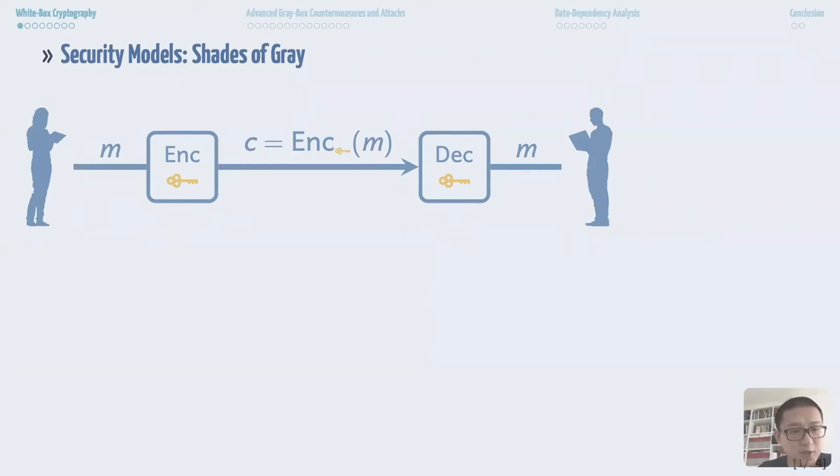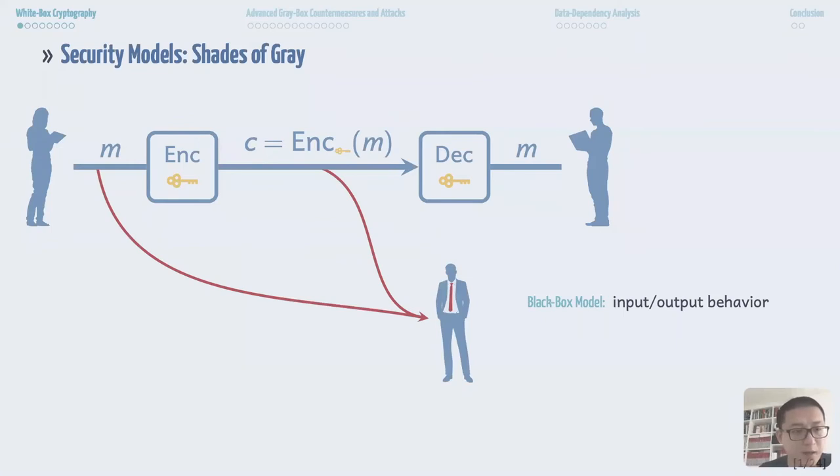We consider two parties to communicate over an insecure channel with a pre-shared secret K. Classical cryptanalysis is done in a black box model in the sense that the adversary only has access to the encryption decryption algorithm as a black box. That is, the adversary can only learn the input and output behavior of the cipher.